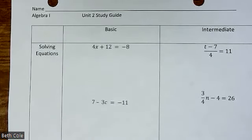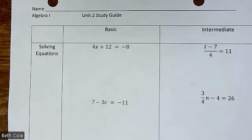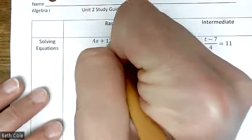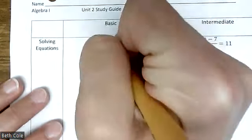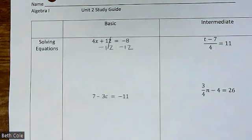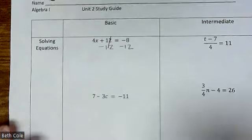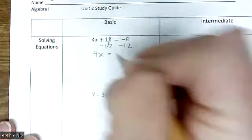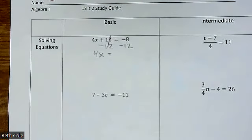All right, so the front half of this is just on solving equations and we've got easy, medium, and difficult. For this first one, first step you're going to subtract 12 — do minus 12. You have to make sure you're showing all your steps; you have to write all that for me. My telepathy is malfunctioning — I can't crawl inside your brain and know what you meant to say. That would give you 4x equals negative 8 and negative 12.